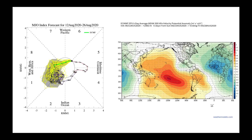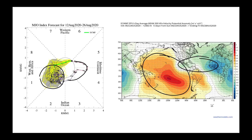One last thing: big changes we've seen in the MJO recently continue, with it coming out of phases four and five and running back over to phases one and two, where it spent so much time in May, June, and July. That is going to keep a lot of the upper level dynamics over the Pacific such that we get sinking motion in the atmosphere with better rising motion over Africa and the Indian Ocean. This is going to continue during the heart of our hurricane season to allow for better tropical cyclone development of easterly waves coming off of Africa.